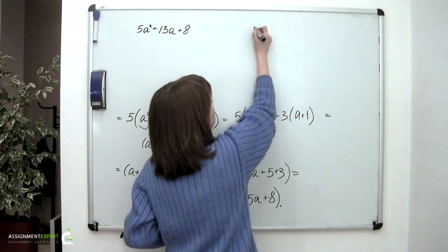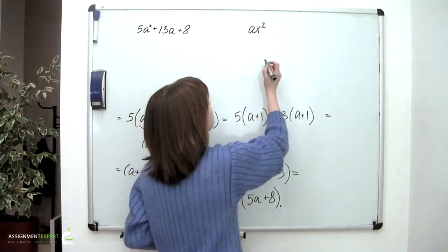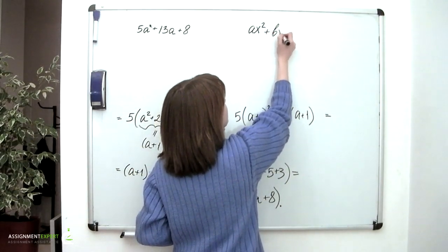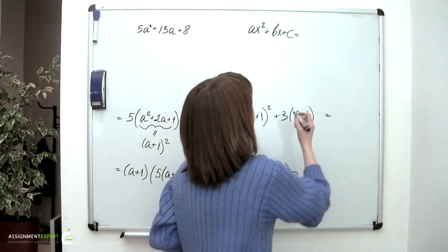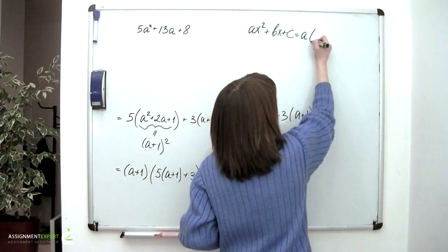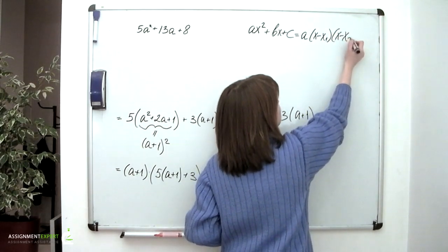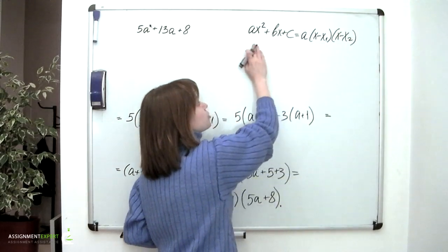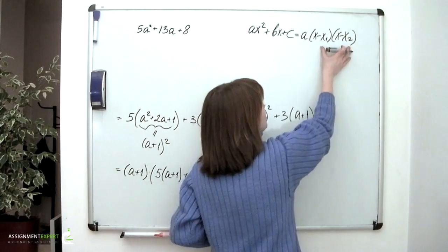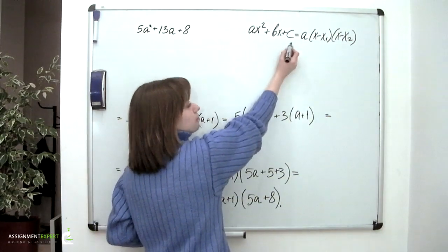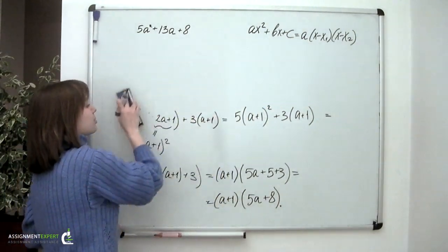We may probably remember the formula allowing to factor the quadratic polynomial. And in general it looks the following way. So if we have a quadratic polynomial a times squared x plus b times x plus c, it may be factored as a times x minus x1 times x minus x2, where a is a coefficient standing next to x squared and x1 and x2 are the roots of this polynomial.